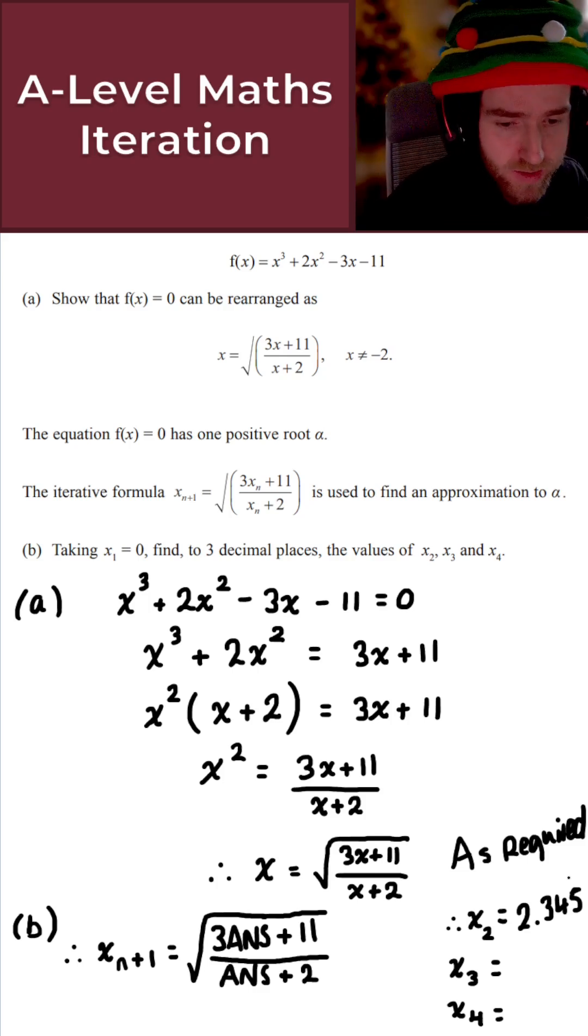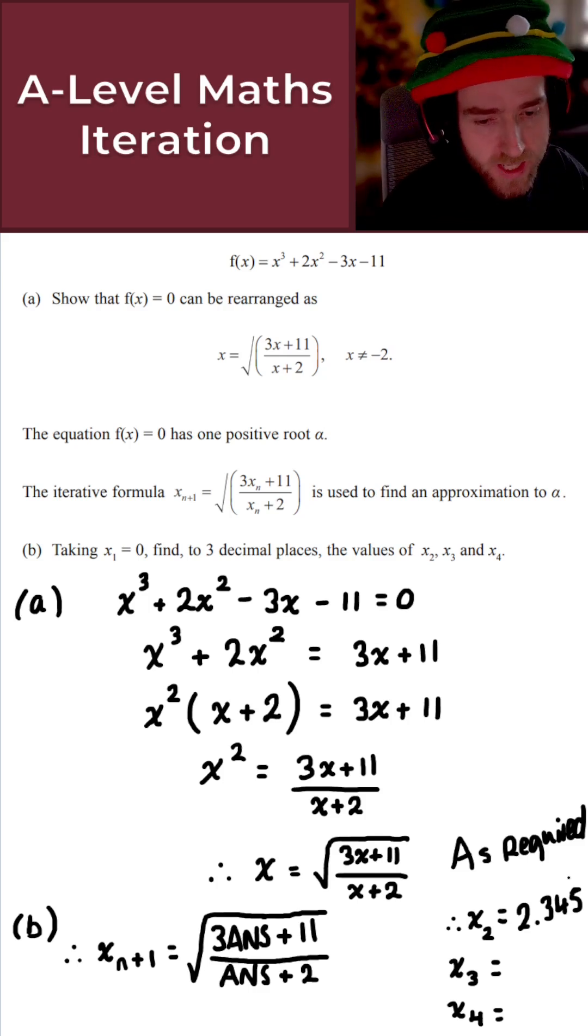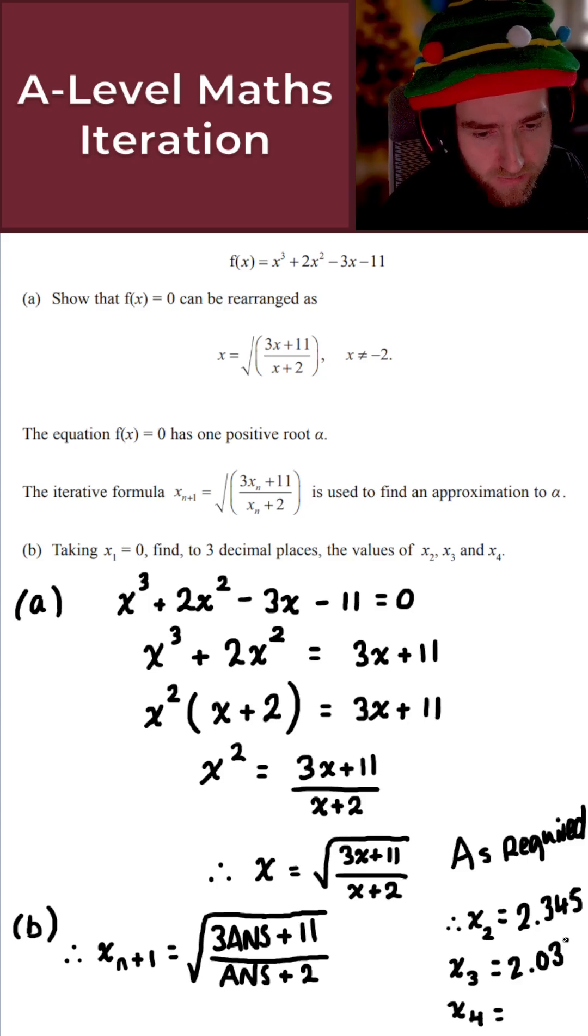Press Enter again on your calculator, and this will give us x3. And if you've done this correctly, what you'll get is 2.037.